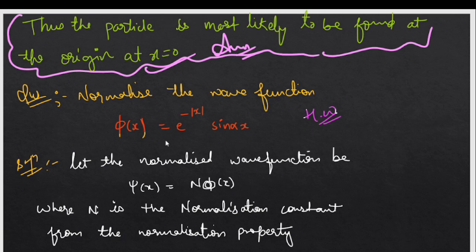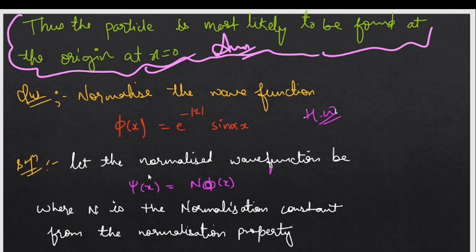We have to use a proper wave function and understand what we have to do. The normalized wave function form is phi(x) = N·phi(x), where N is your normalization constant or factor. The normalization property is integration over all space. Since we have no limits here, we will integrate from minus infinity to plus infinity.